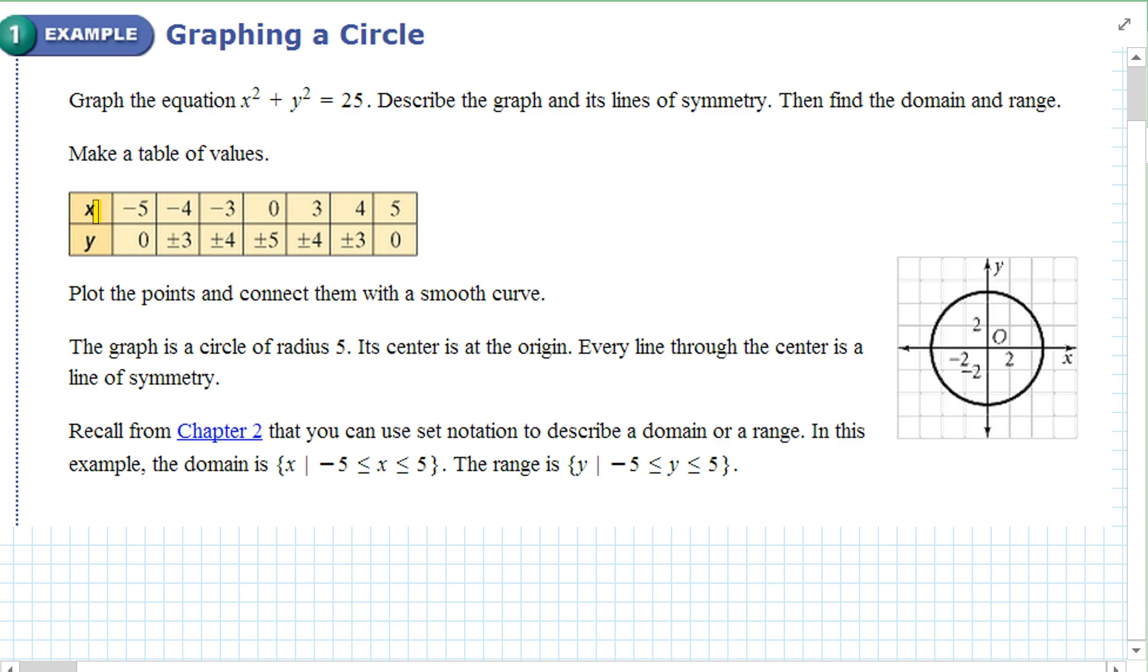So you find all the values of x, all numbers between negative five and five. And you find all values of y, all numbers between five and negative five. Then you plot the points and what do you notice? You make a circle. We'll talk about that in more detail later. The graph is a circle of radius five. The center is at the origin. Every line through the center is a line of symmetry.